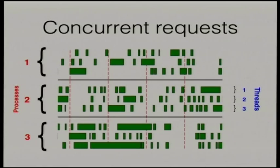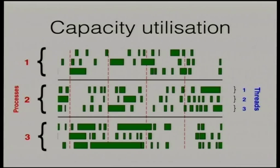The configuration used here had three processes where each process was running with three threads. As the web requests arrived, they were distributed across each of the three processes, handled by whichever thread in the process was available to accept the request. There are lots of gaps between requests, which means that the WSGI server was running at a low level of capacity utilisation and still potentially had capacity for handling a greater number of requests. The big question is how much more traffic could the WSGI server actually handle with this configuration? This is difficult to determine because the time taken to handle a request can be affected by an increase in the number of requests, as well as how much work is performed by any concurrent requests — meaning things don't necessarily scale up in a predictable way.